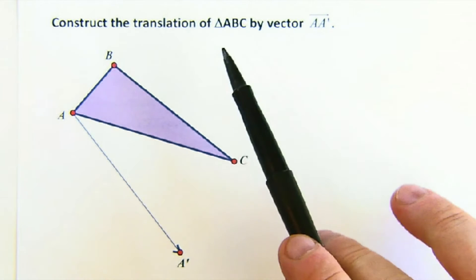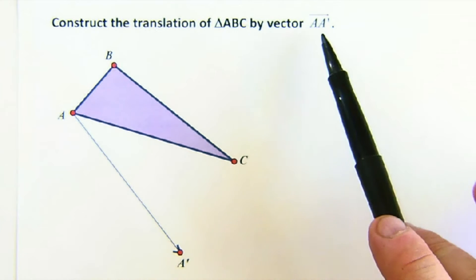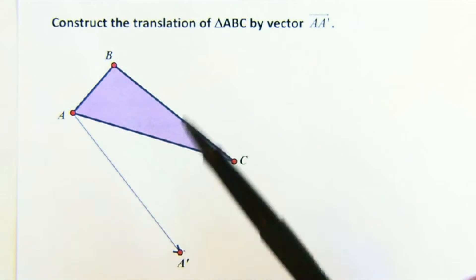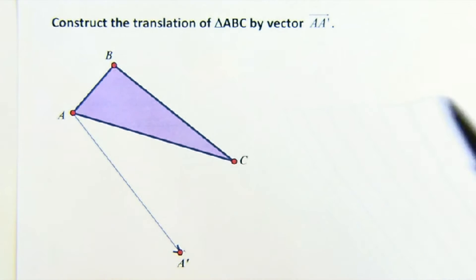It says we want to translate triangle ABC by vector AA'. So we know where A' goes, we're just going to find B and we've got to find C.